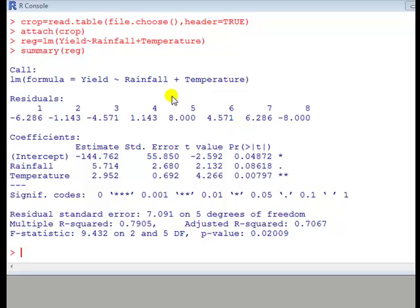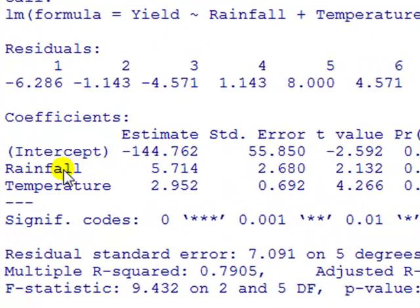So in the example here I've got, continuing from a previous session, regressing yield on rainfall and temperature. Now, the interpretation of the rainfall here is that if rainfall increases by one unit, being inches, then the model predicts that the yield will increase by 5.7 units, units here for yield being bushels per acre.